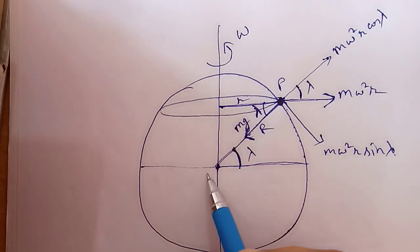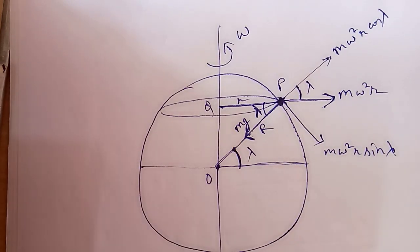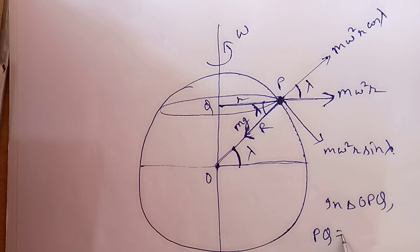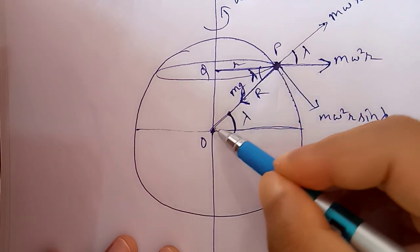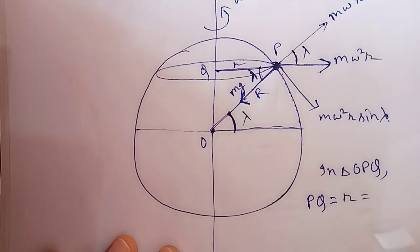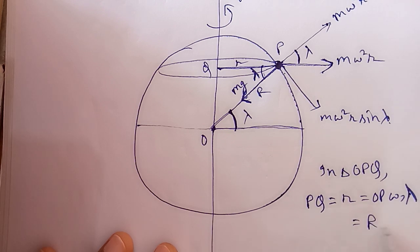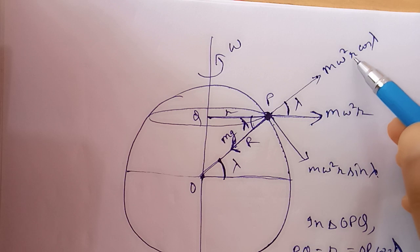In this triangle, let's name this point O. This is already P, and this is Q. In triangle OPQ, the side PQ (which is small r) equals OP·cosλ, because OP is the hypotenuse, PQ is the base, and λ is the angle. So small r equals R·cosλ, where OP equals capital R.